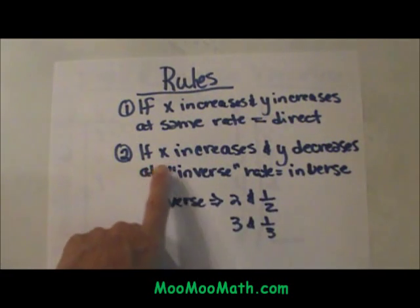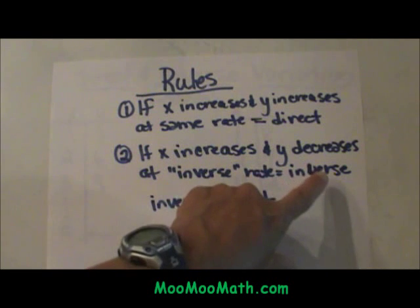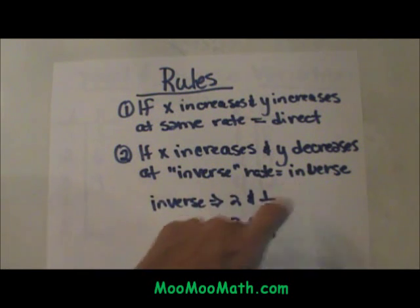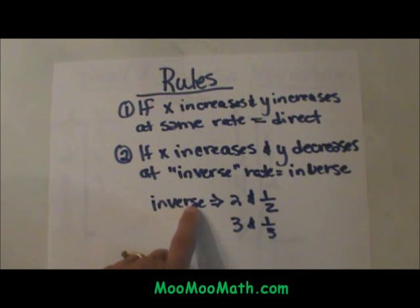If x increases but y decreases, then that is an inverse variation. When I say inverse, if you have the value of 2, then the inverse of it is the reciprocal, one-half.